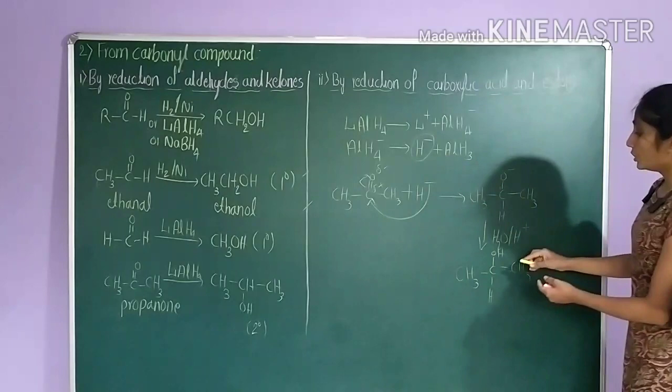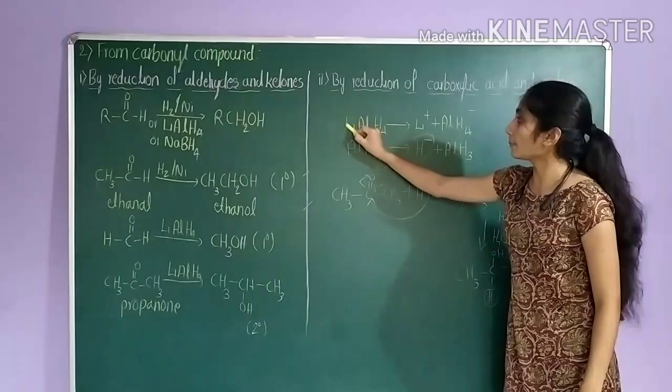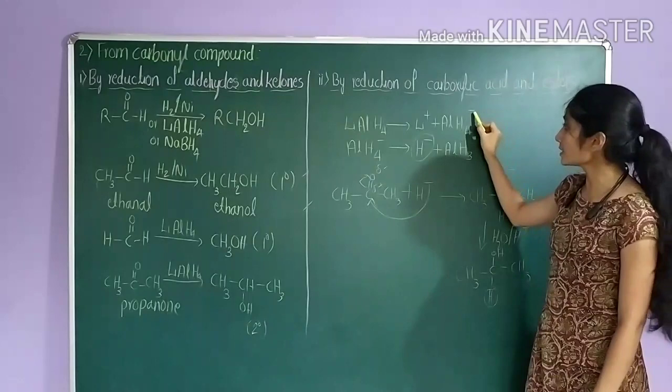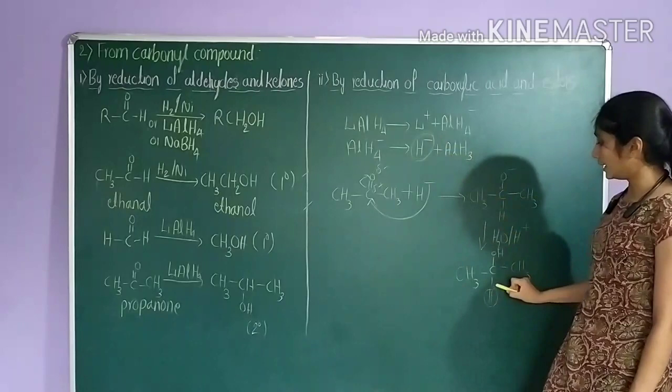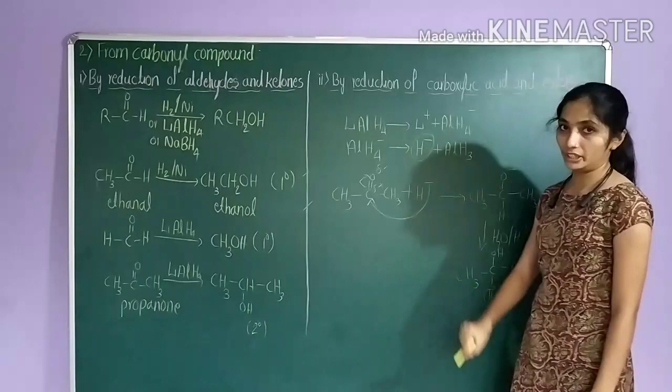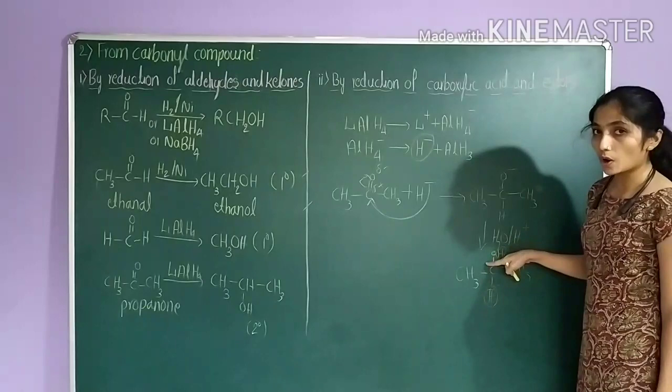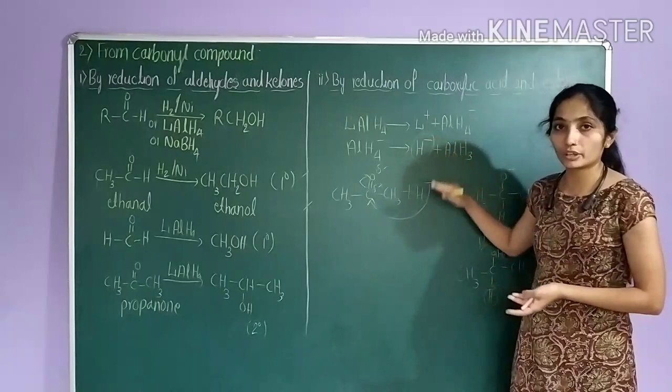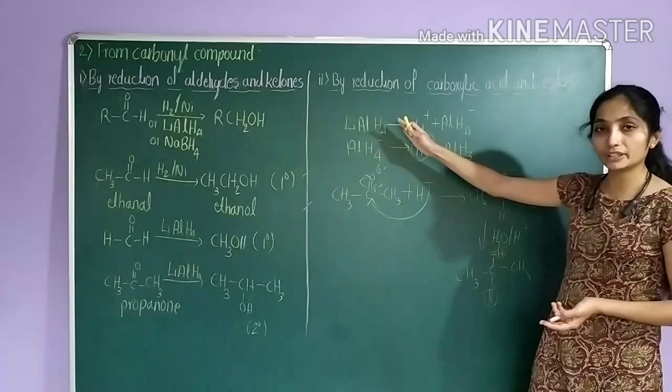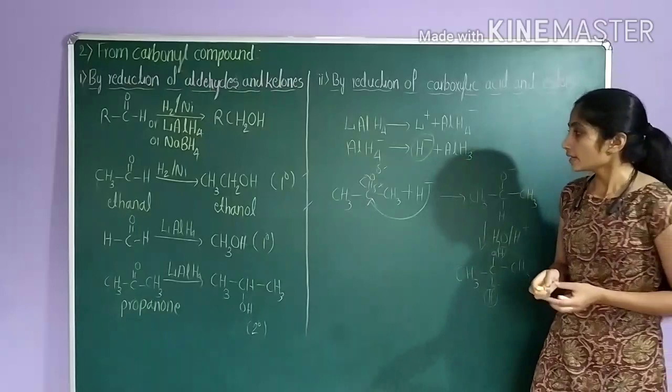Here, observe: the hydrogen attached to carbon comes from lithium aluminium hydride, because LiAlH4 dissociates into Li+ and AlH4–, and AlH4– gives H–, the hydride ion. And the hydrogen attached to oxygen comes from the water molecule. In the exam, they will ask questions based on this: the hydrogen attached to carbon is from lithium aluminium hydride, and the hydrogen attached to oxygen is from water.